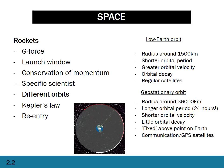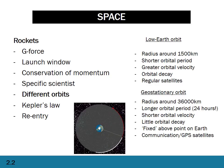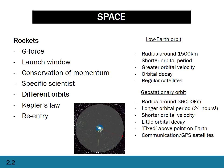Geostationary orbit is much higher up, with a radius of about 36,000 kilometers, a longer orbital period which is in fact 24 hours, and a lower orbital velocity. There's very little orbital decay because there's very little atmosphere at that height. Geostationary satellites are effectively fixed above a point on earth because their orbital period is exactly 24 hours, so from the ground they always appear to be at the same point. They're used for communication and GPS satellites because you can always know where the satellite is relative to the ground.